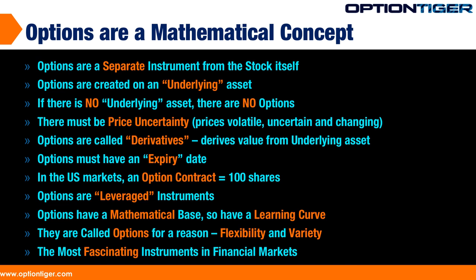All options must have an expiry date. Think of the olive farmers and the speculator — could the speculator have produced the contract two or three years later and demanded it be executed? Obviously not. The farmers would not honor it because the contract was for that specific season. Similarly, in financial markets, we have an expiry date. In the U.S., one options contract is equal to 100 shares of the underlying asset. Contracts are standardized at 100 shares so that when it comes time to settle, things are very standardized with no confusion.